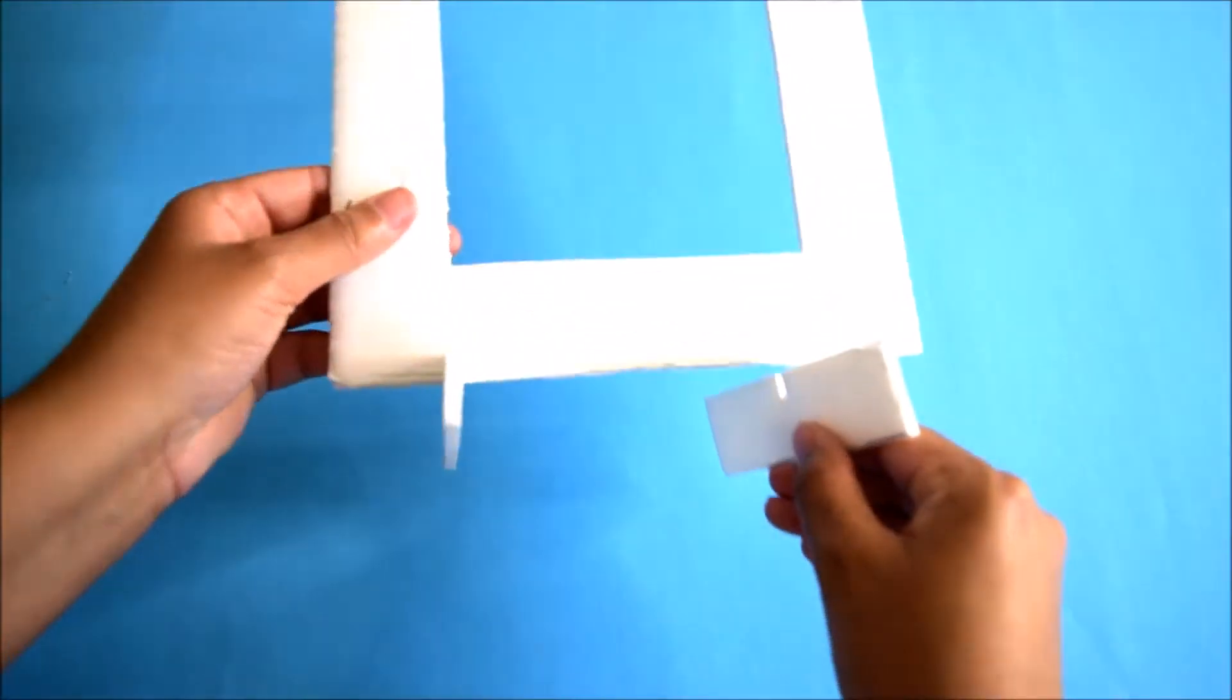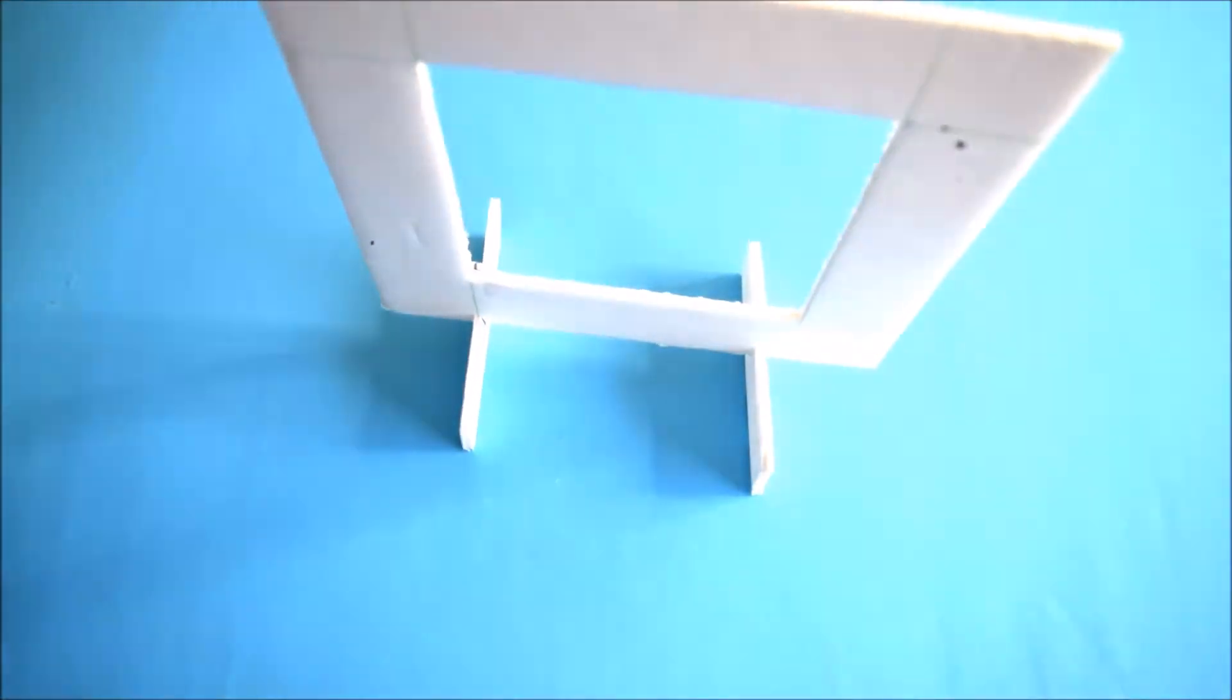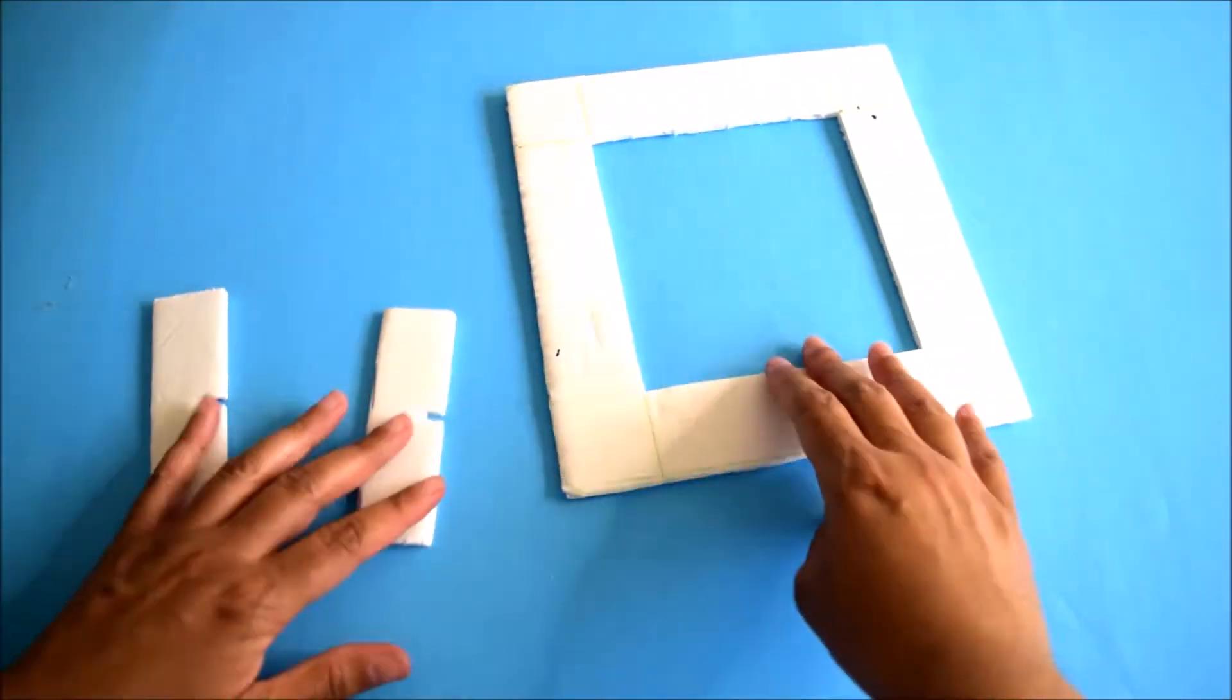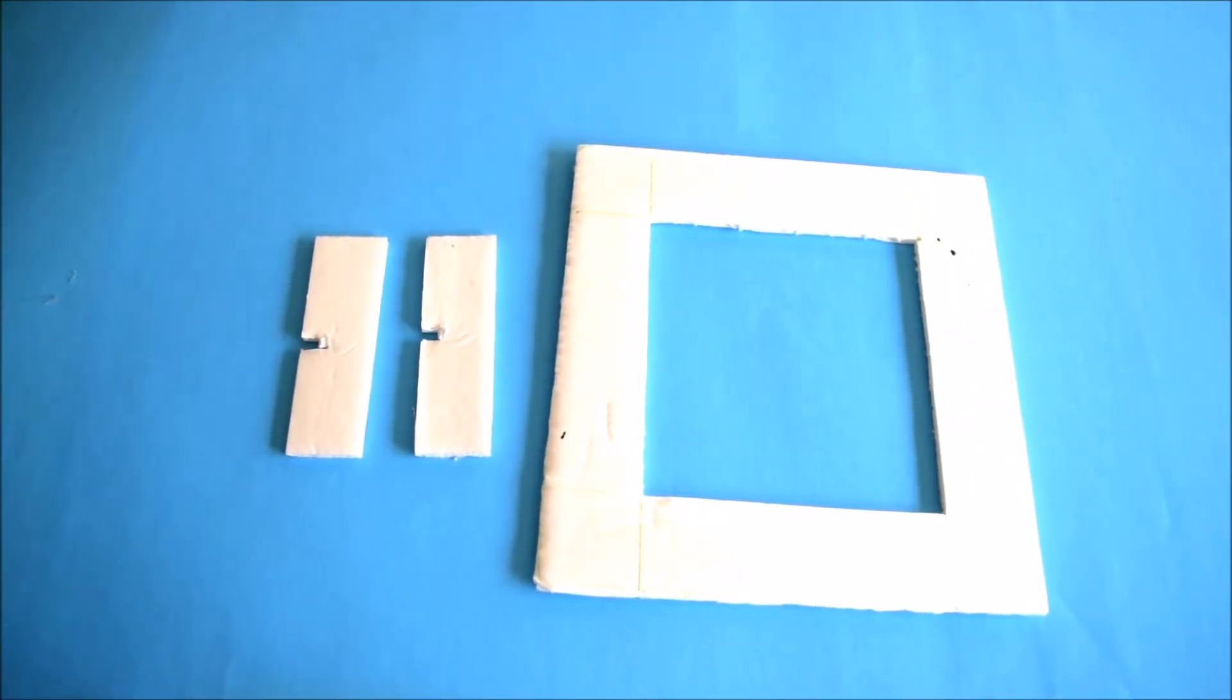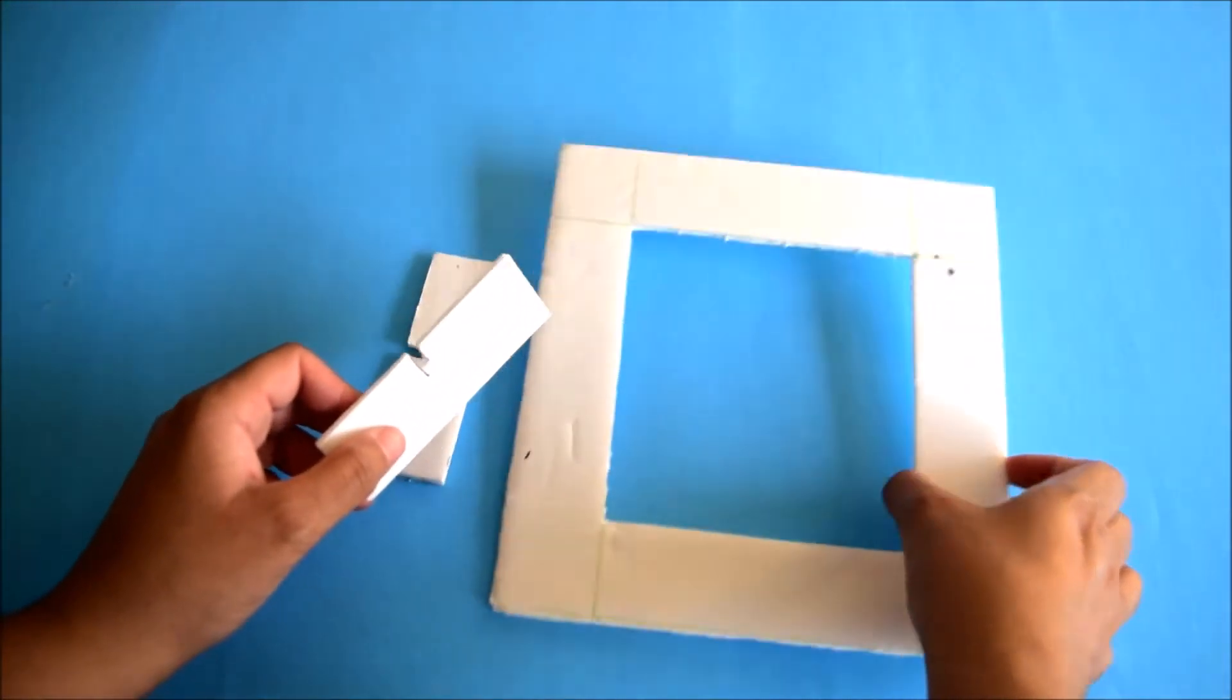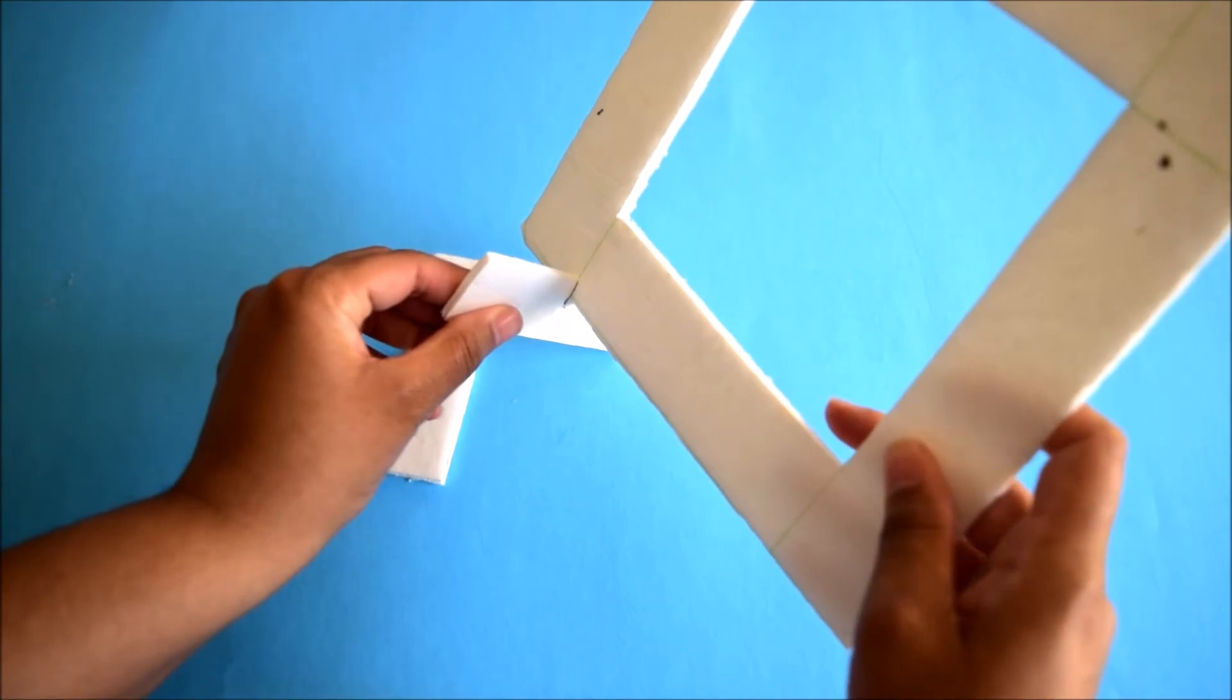So the next one are going to be cute picture frames that you can put onto the tables. The frames are basically you just cut out a square or any shape and then you're going to cut out two smaller pieces and cut in slits onto the smaller pieces.